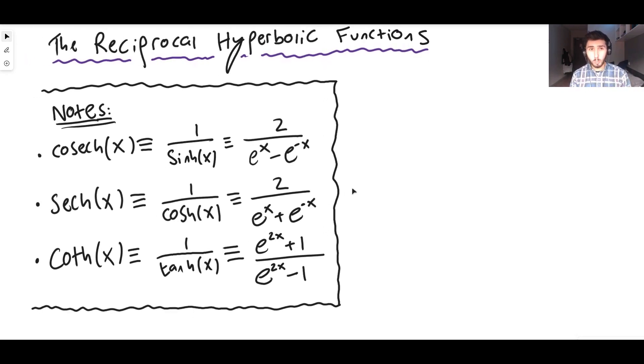So the normal hyperbolic functions we have shine, co-shine and than or thangent. Very weird. Or shine, cosh and than. However you want to pronounce them, however you want to say them, you can say them however you want because there is no official pronunciation for any of these guys.